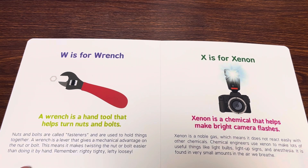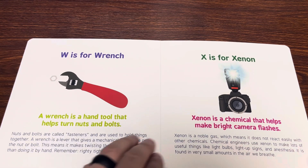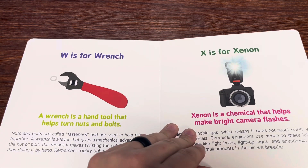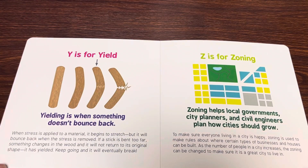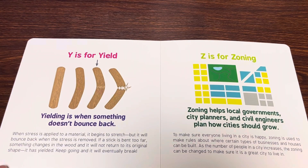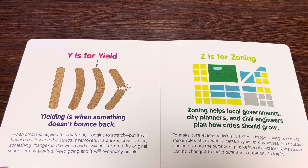X is for xenon. Xenon is a chemical that helps make bright camera flashes. Y is for yield. Yielding is when something doesn't bounce back.